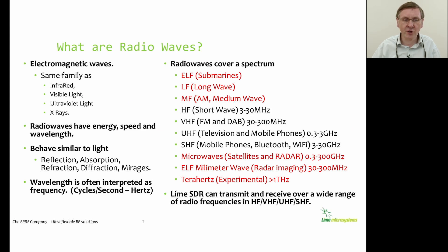So what are radio waves? Radio waves are electromagnetic waves in the same family as infrared, visible light, ultraviolet light, and x-rays. Radio waves have energy, speed, and wavelength. They behave very similar to light - they can be reflected, absorbed, refracted, and diffracted, and even produce mirages.